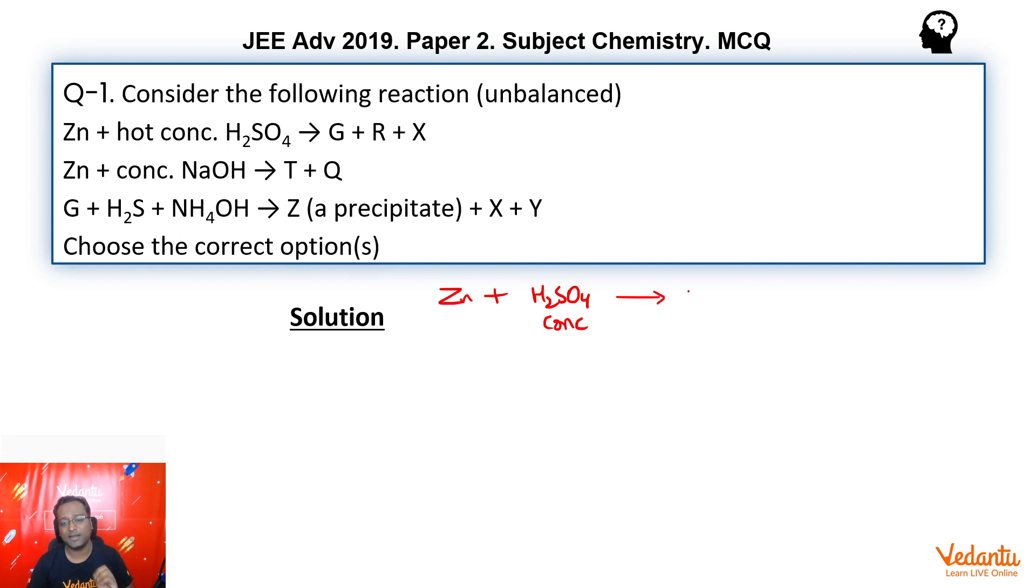But when you have concentrated acids, their central atom rather gets reduced. So you have SO2 and water vapour being formed. So this is perhaps your compound G because it is getting repeated ahead.